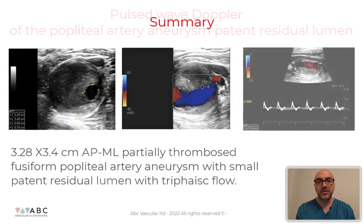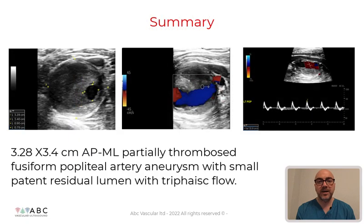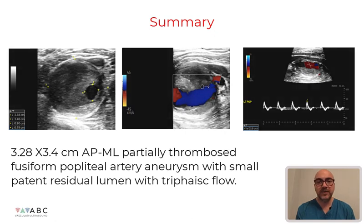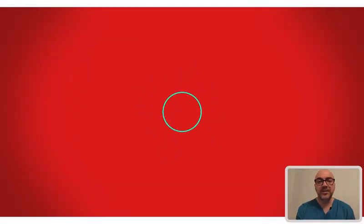In conclusion, we have identified a large fusiform aneurysm of the popliteal artery which is partially thrombosed and presents a small patent residual lumen with triphasic flow. Thanks for joining ABC Vascular Ultrasound.